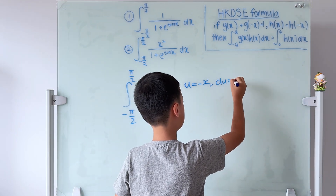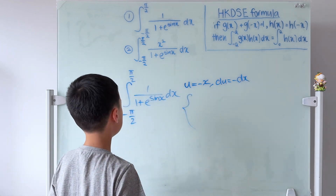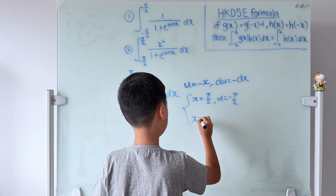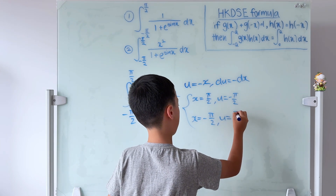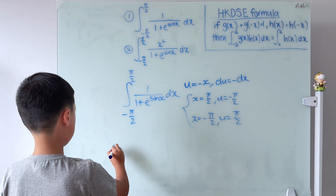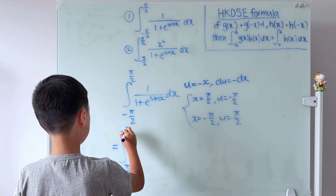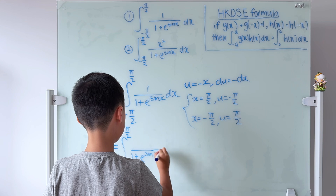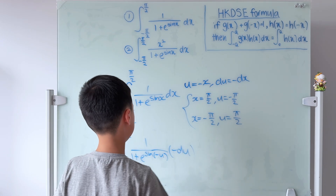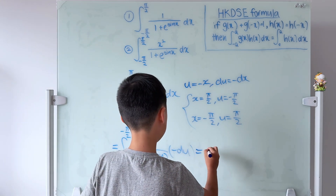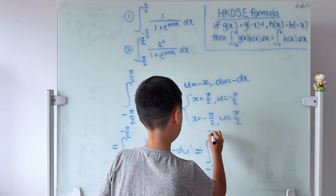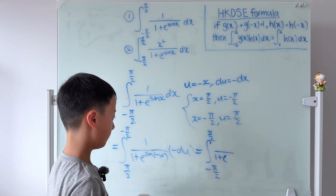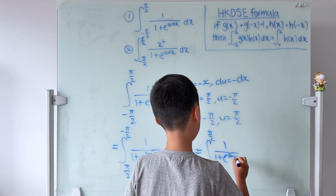With u = −x, we get du = −dx. Changing the bounds: when x = π/2, u = −π/2, and when x = −π/2, u = π/2. So the integral becomes the integral from π/2 to −π/2 of 1/(1 + e^(sin(−u))) times (−du). Using the negative to flip the bounds, it becomes the integral from −π/2 to π/2 of 1/(1 + e^(−sin u)) du.